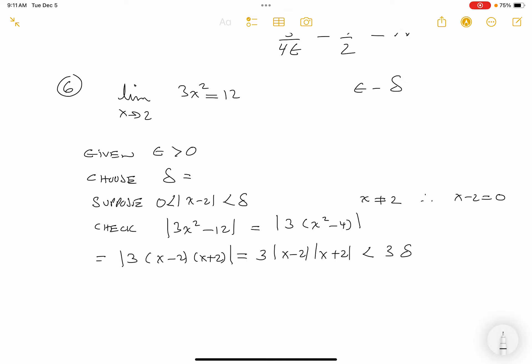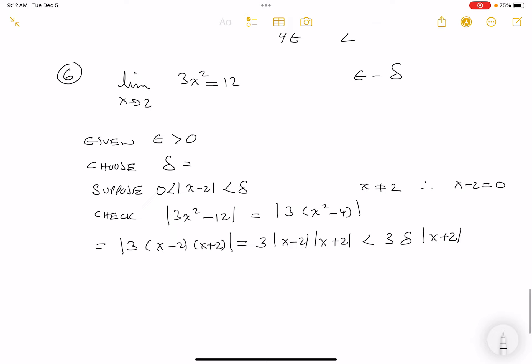And then look at this thing over here. I'm realizing I got that delta thing. So I can say this is less than 3 delta, and then absolute value of x plus 2. And this is where things bogged down for me. I look at this thing and say, I don't have x plus 2 anywhere.